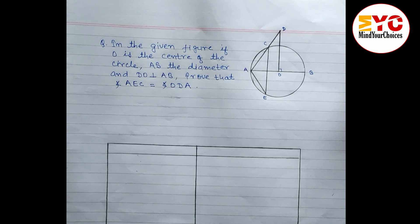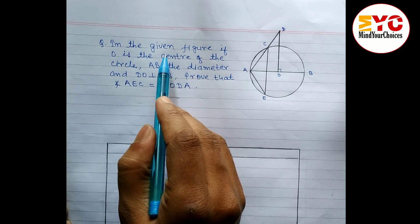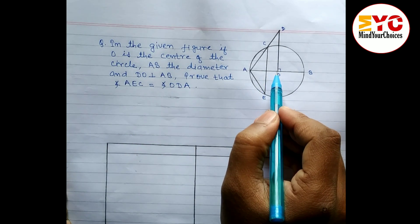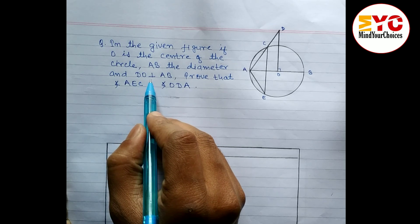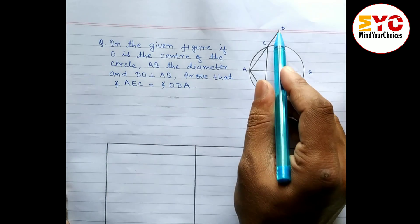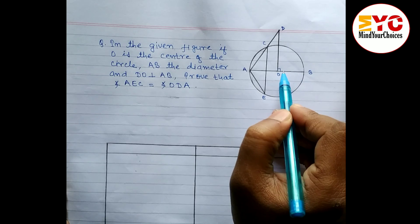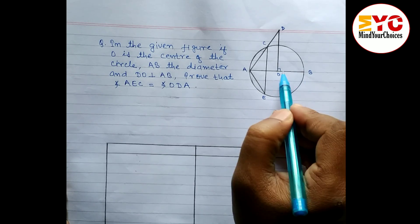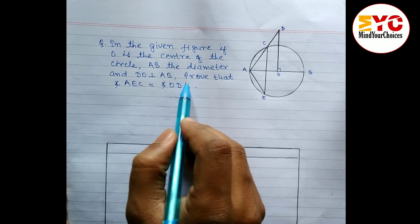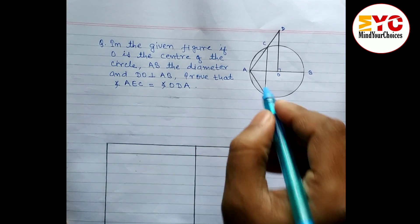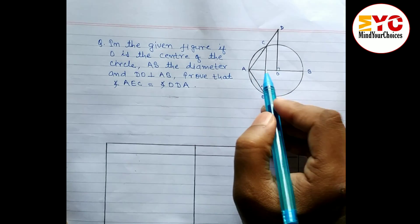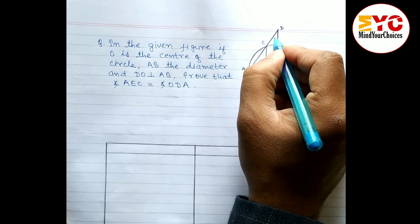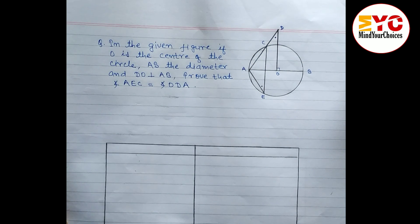Hello everyone. In this video we will learn how to do an unseen theorem which is in front of you. This question is taken from circles. In the given figure, O is the center of a circle, and AB is the diameter which is passing from the center. DO is perpendicular to AB, which means this angle is 90 degrees. Both BOD and AOD are 90 degrees. We have to prove that angle AEC is equal to angle ODA.